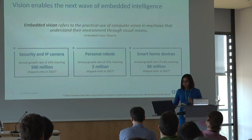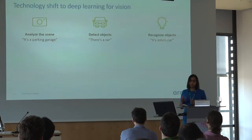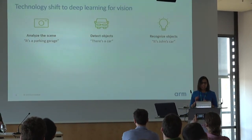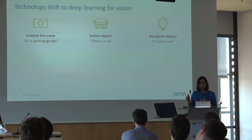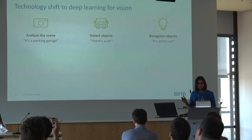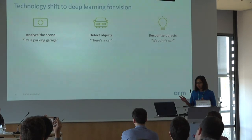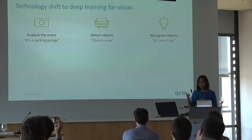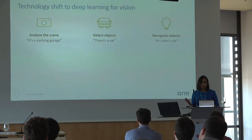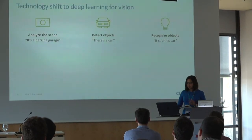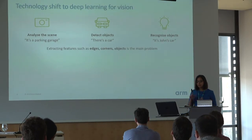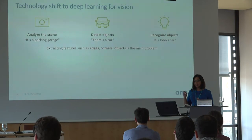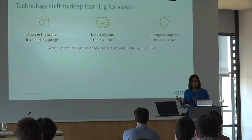Let's break it down from a technical viewpoint. We can break this down into sub-problems like analyzing the environment and scene, detecting objects, detecting a change in the scene, and recognizing objects. The main problem is extracting features from visual data, such as edges, corners, and objects.